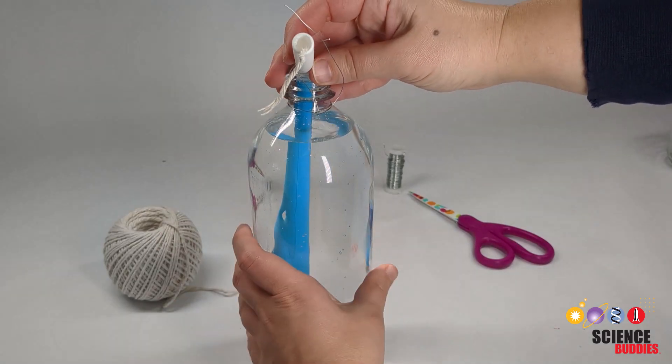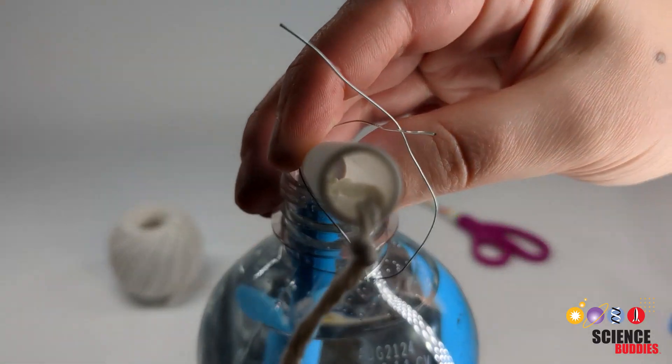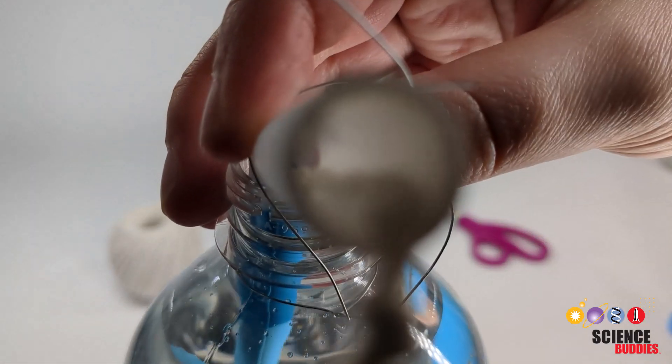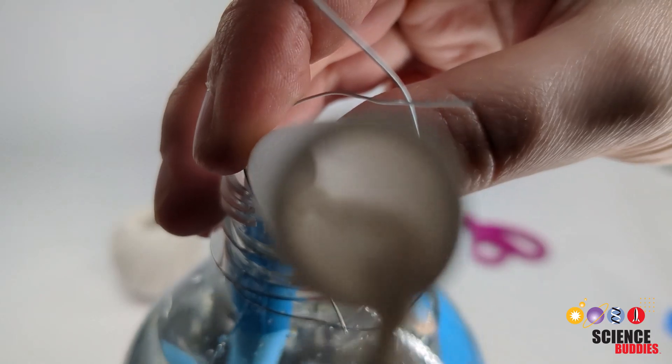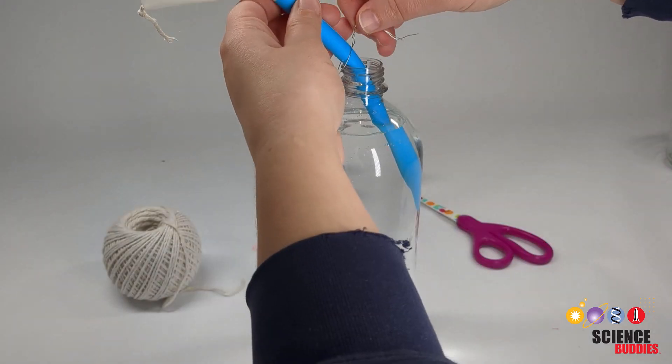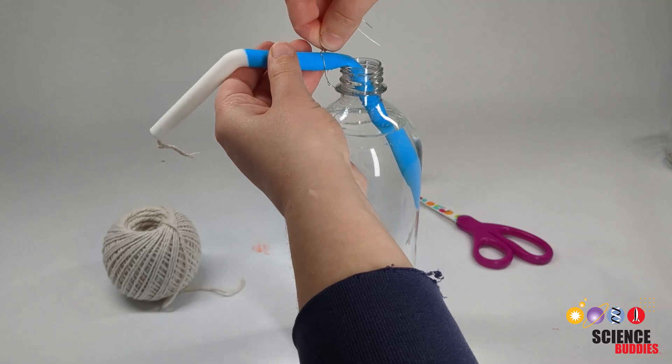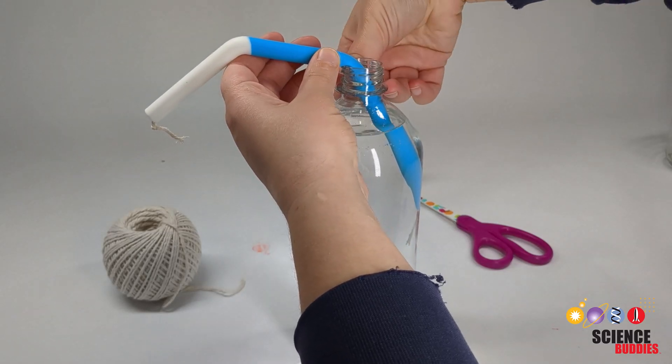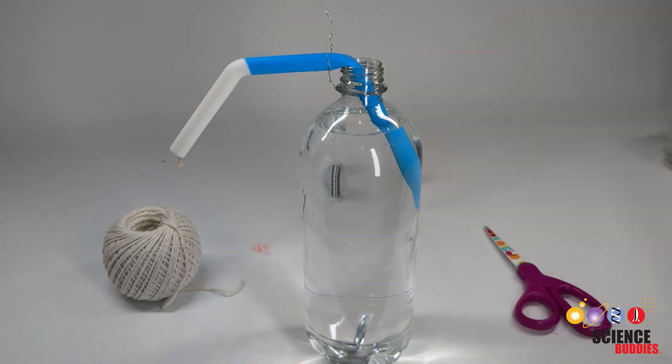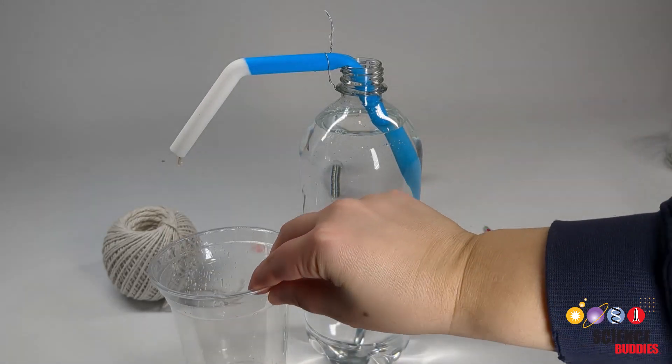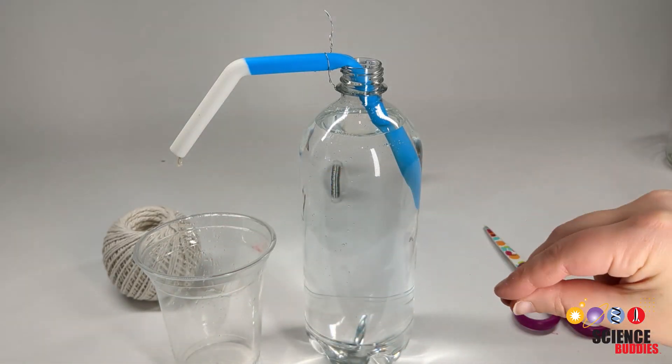To get the wick to start dripping, suction up the water through the straw with your mouth. Then, carefully remove the straw from the water and place it back into the bottle to equilibrate the pressure. Arch the straw end below the top level of the water in the bottle, ensuring that the water is dripping. After it starts dripping, secure the wick in place with the wire wrapped around the mouth of the bottle.